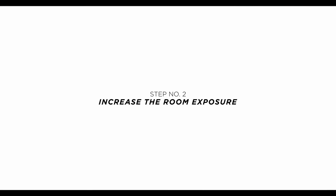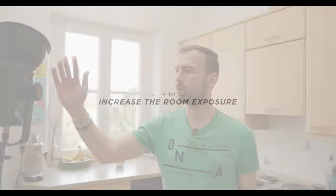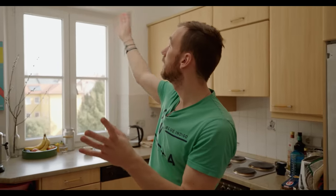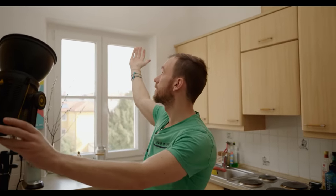The first thing we want to do is bring up the exposure in the room itself. What I usually do is bounce a light into the ceiling. Because we have white walls everywhere, the light will bounce back and bring up the overall exposure in the room, which is quite nice.